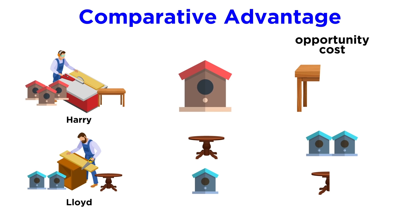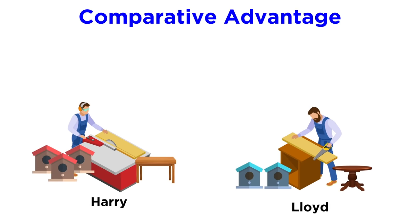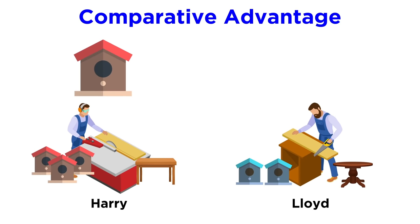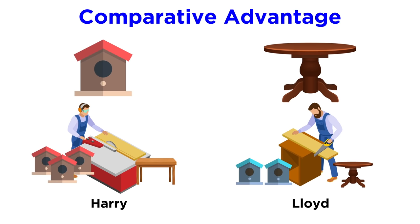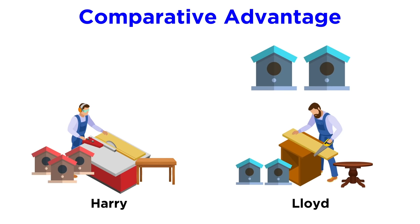Therefore it makes more sense for Harry to make birdhouses. And this works out well for Lloyd too. Lloyd's opportunity cost for making one table — two birdhouses — is lower than Harry's opportunity cost for making one table — three birdhouses. Therefore it makes more sense for Lloyd to make tables. If Harry focuses on birdhouses and Lloyd makes tables, they will end up with three birdhouses and a table at the end of the day, as opposed to two birdhouses and one table if they were to swap.